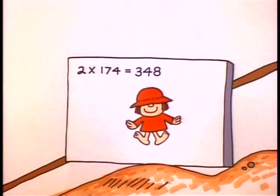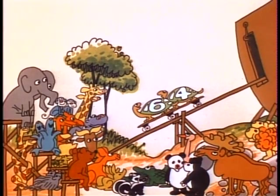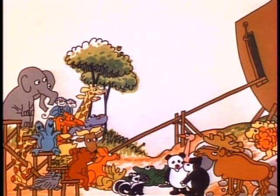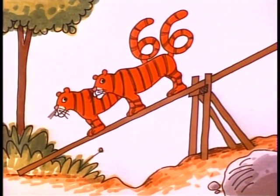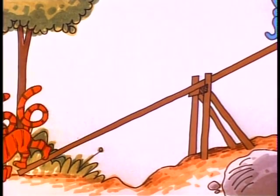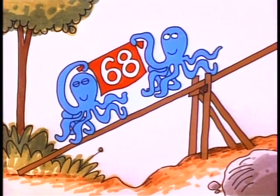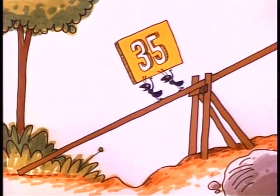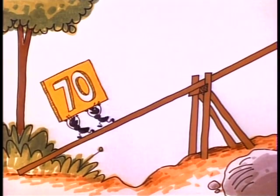Elementary, elementary — twice thirty-two is sixty-four. Elementary! Twice thirty-three is sixty-six. Elementary! Twice thirty-four is sixty-eight. Elementary! Twice thirty-five is seventy. Elementary!